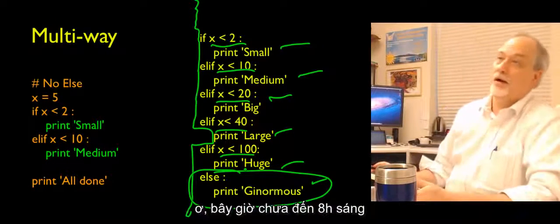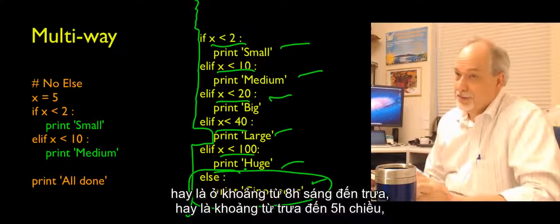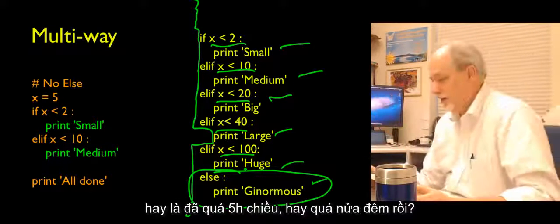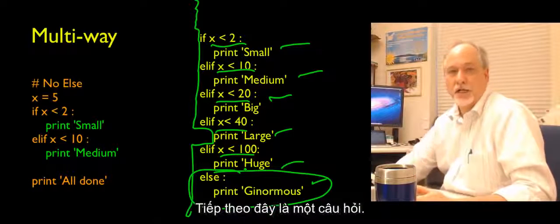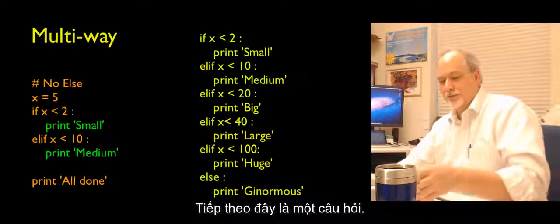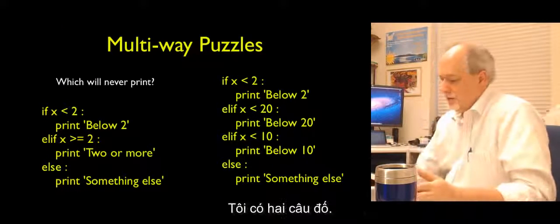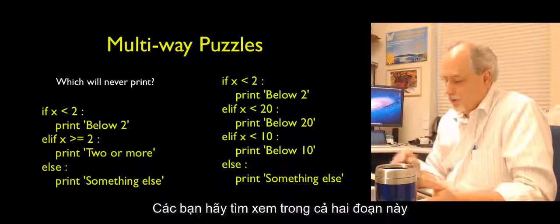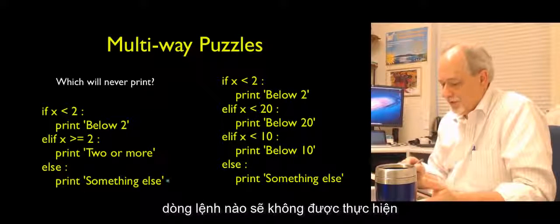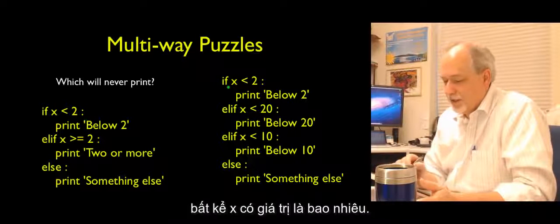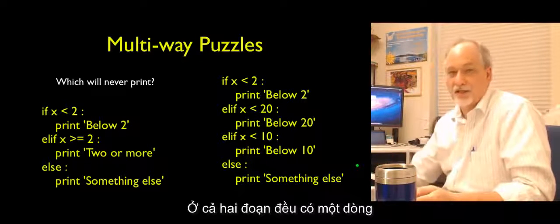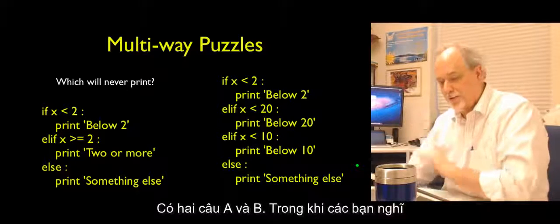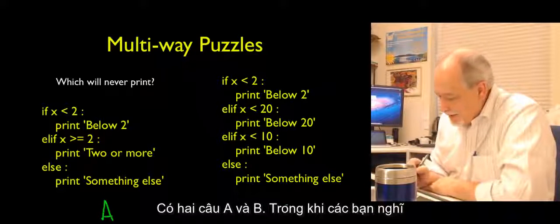There are lots of real-world situations for multi-way ifs: is it before 8 in the morning? Between 8 and noon? Between noon and 5? After 5? Here's a puzzle with two problems — look at them and figure out which line will never execute regardless of the value of x. There's one such line in each problem.